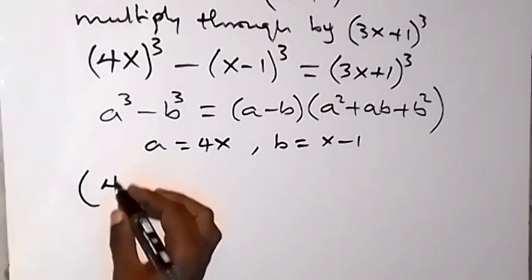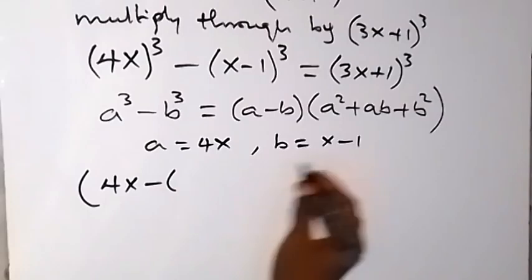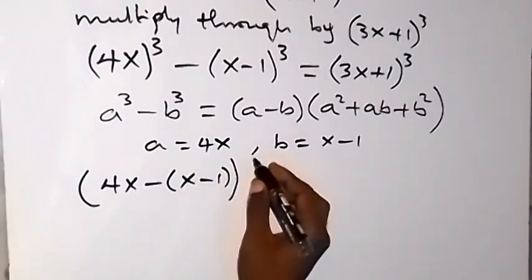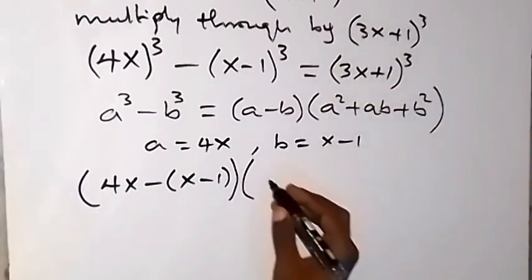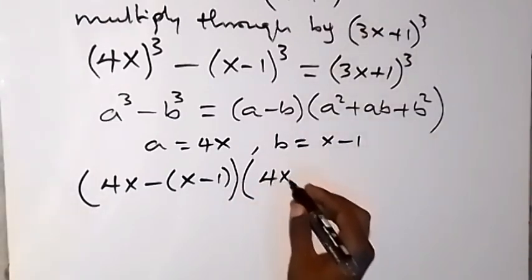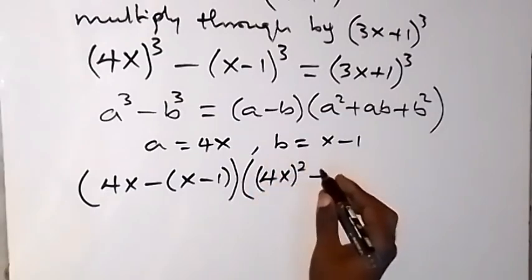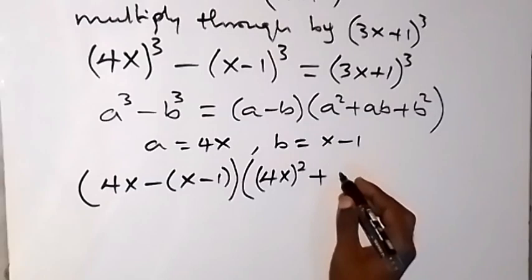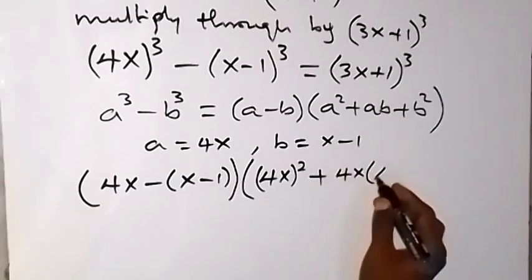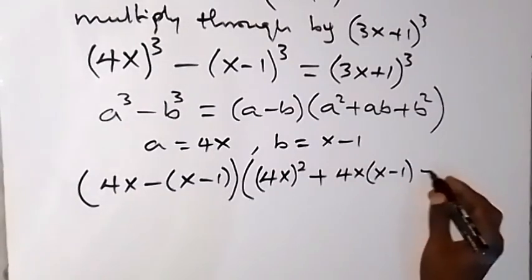We have (a - b), which is 4x minus (x-1), multiplied by a², which is (4x)², then plus ab, which is 4x multiplied by (x-1).